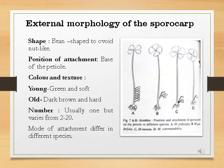The sporocarps are attached to the petiole of the plant. Regarding the external morphology of the sporocarp: in Marsilea, the sporocarp is bean-shaped to ovoid, nut-like. The sporocarps are attached to the base of the petiole with the help of a small stalk. The young sporocarps are green and soft; when it matures, it becomes dark brown and very hard. The number of sporocarps is usually one but varies from 2 to 20 based on the species.